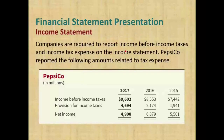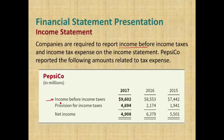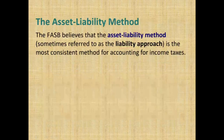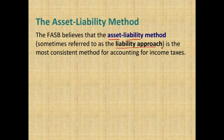You are also required to report income before income taxes, then the income taxes themselves — as shown with PepsiCo as an example. Also, GAAP uses the asset-liability method, sometimes referred to as the liability approach. This is the most consistent method for accounting for income taxes.